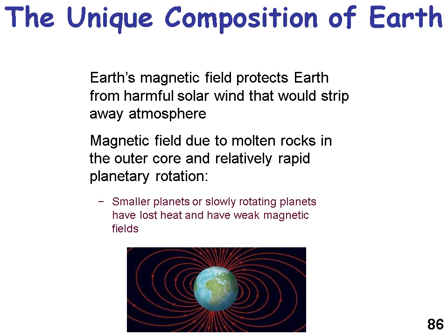The Earth's magnetic field is important because it protects the Earth from harmful solar wind that would otherwise strip away our atmosphere. We wouldn't have an atmosphere without a magnetic field, and we wouldn't have a magnetic field without a liquid outer core. The magnetic field is due to molten rocks in the outer core and the planet's relatively rapid rotation — the fact that our planet rotates on its axis with liquid inside gives us a magnetic field.